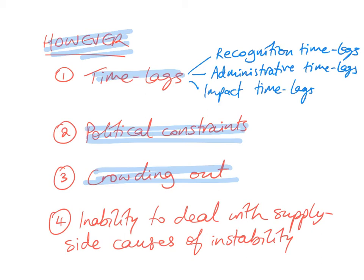The last limitation is fiscal policy's inability to deal with supply-side causes of instability. If there are supply-side causes of instability, like short-term supply-side shocks — for example, a rise in global oil prices or a drop in the exchange rate — all of these things will cause cost-push inflation. This is a supply-side cause of instability, and fiscal policy doesn't always know how to deal with these supply-side causes of instability.